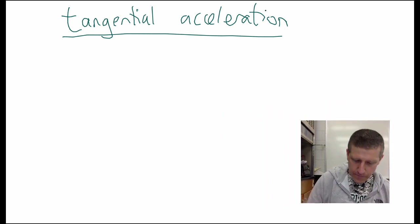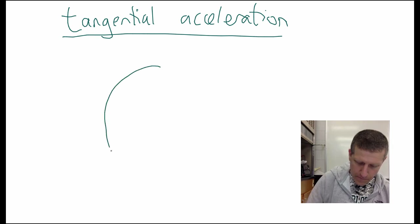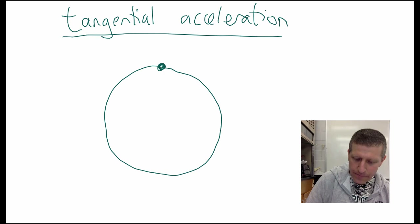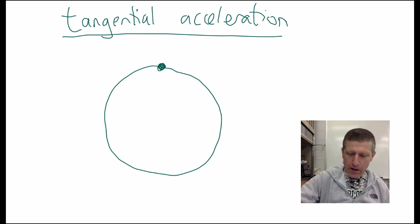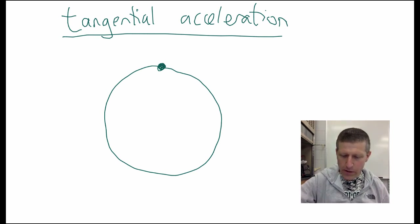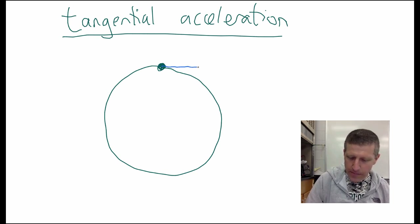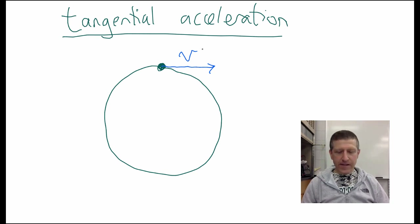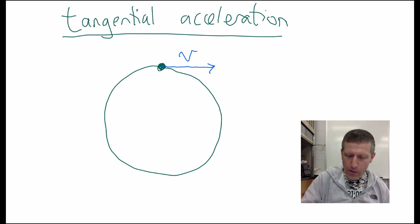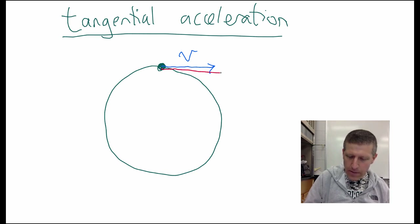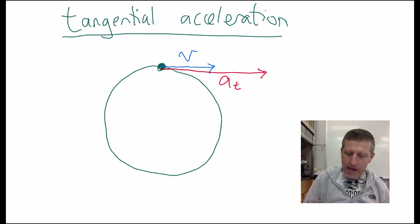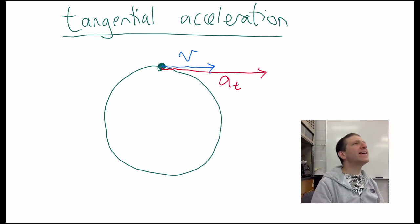Here's our circle, and here's our object. Let's look at it when it's at the top. The velocity is this way — that's the speed. Now its acceleration, or one component of it, is this way. I'm going to label it a-sub-t. It's accelerating tangentially.